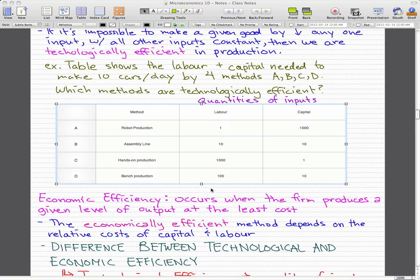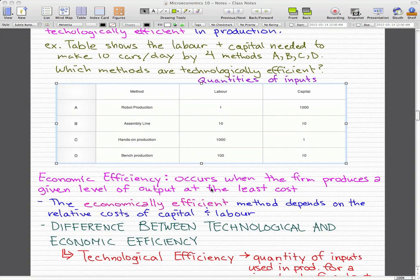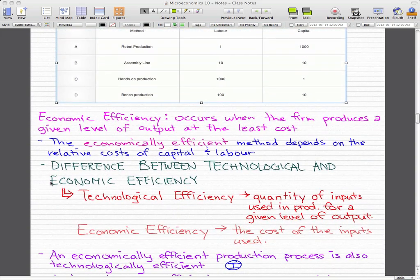Now economic efficiency occurs when a firm produces a given level of output at the least cost. The economically efficient method really depends on the relative costs of capital and labor, and the difference between technological and economic efficiency. This is actually the really important part. For technological efficiency, it pretty much implies the quantity of inputs used in production for a given level of output, and economic efficiency implies the cost of the inputs used.